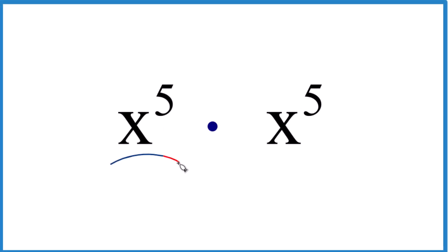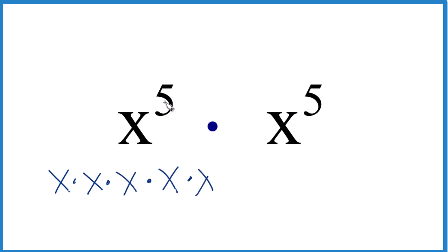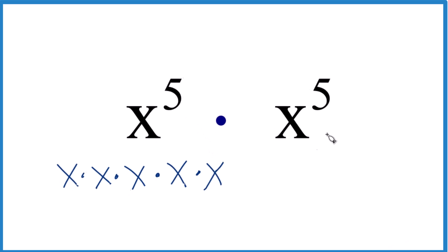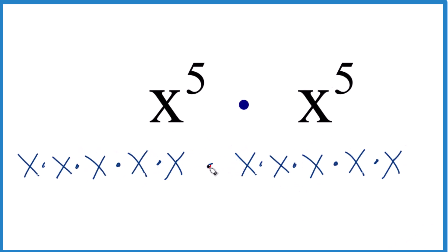Let's multiply x to the fifth times x to the fifth. Here's how we do it. We can write x times x times x times x times x — that's x to the fifth. And then we can do it again here, so we just multiply these together: x to the fifth times x to the fifth.